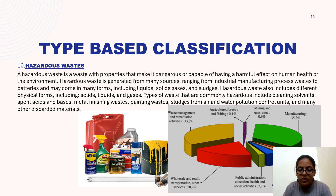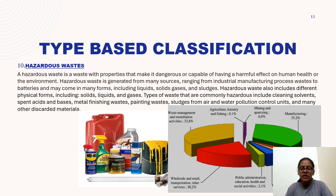From the pie chart: agricultural, forestry, and fishing contribute 0.1% of hazardous waste; mining contributes 0.9%; manufacturing contributes 35.2%; electricity, gas, steam, and air conditioning supply contributes 1.9%; water supply contributes 1.9%; and construction contributes 3.9%, and so on.